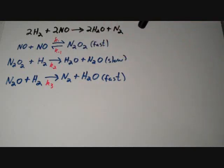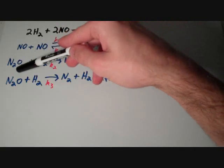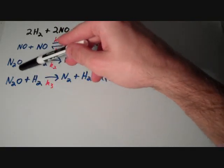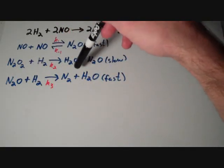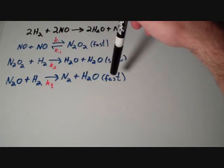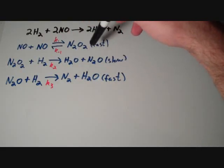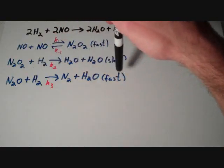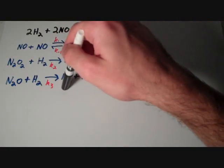And finally, in the third step of the reaction, we have an N2O molecule plus an H2 molecule yields an N2 molecule plus an H2O molecule. And the rate constant for this elementary step is K3.